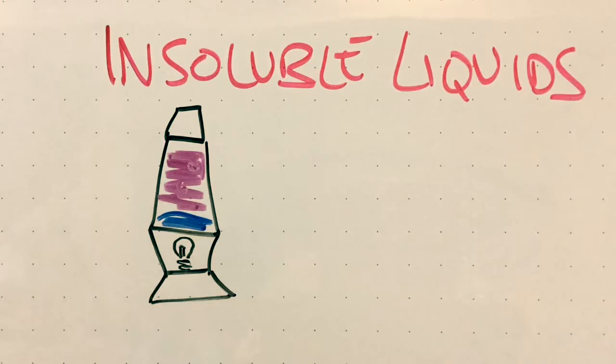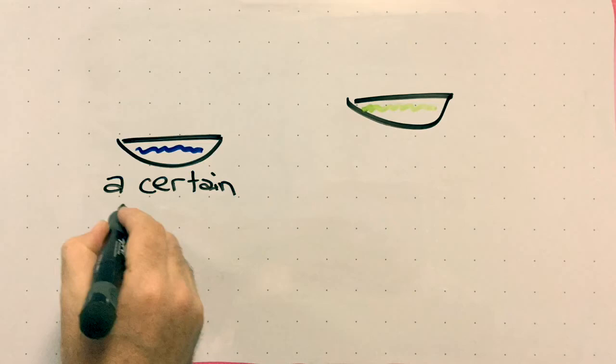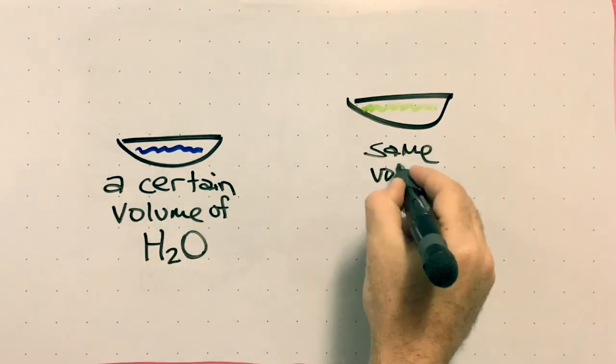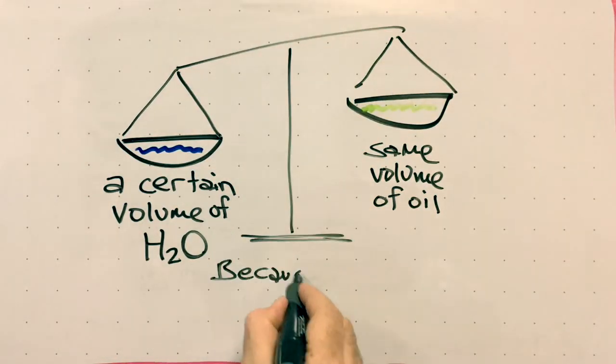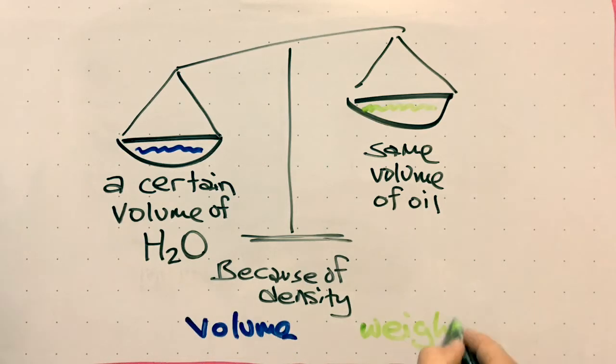In our DIY lava lamps, we'll mix oil and water, which are insoluble but are quite different in density. That means a certain volume of water will weigh much more than the same volume of oil, which is ideal for this DIY lava lamp project, even if oil and water would not work for the store-bought lava lamp.